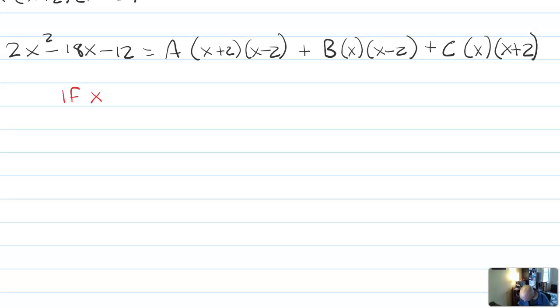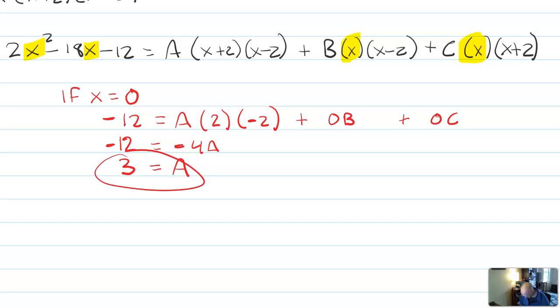So let's test. What if x is equal to zero? And I'm choosing zero because I noticed that x and x both are here in these terms, and I also noticed that those will zero out. So if x equals zero in this case, then I would have negative 12 would equal a times two times minus two plus zero b plus zero c. So that really simplifies down to negative 12 equals negative four a. So three has to equal a. There's our solution.